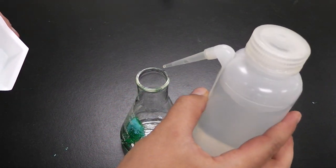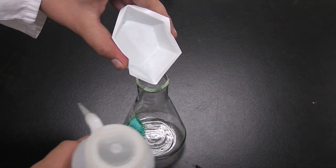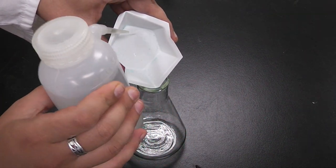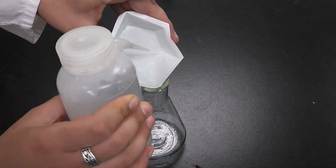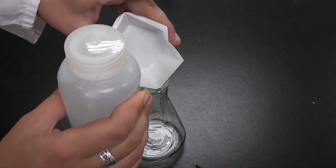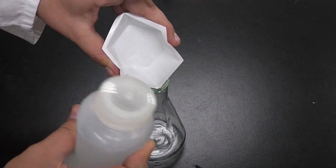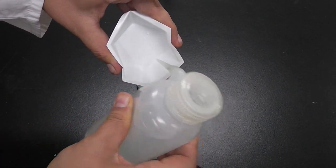When you've done that, grab a wash bottle with deionized water, touch the weighing boat to the Erlenmeyer flask, and gently wash in all of the sample. You don't want to use too much water here, just enough to get the job done.